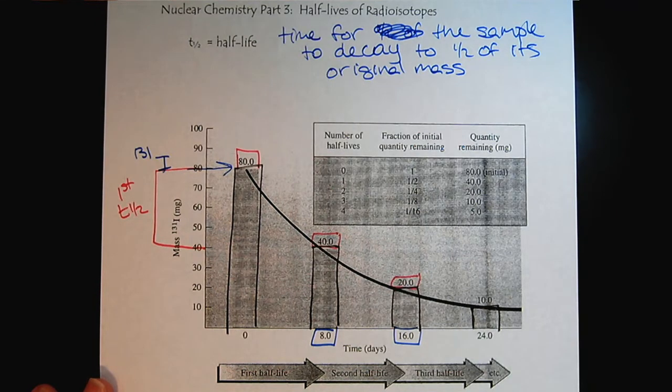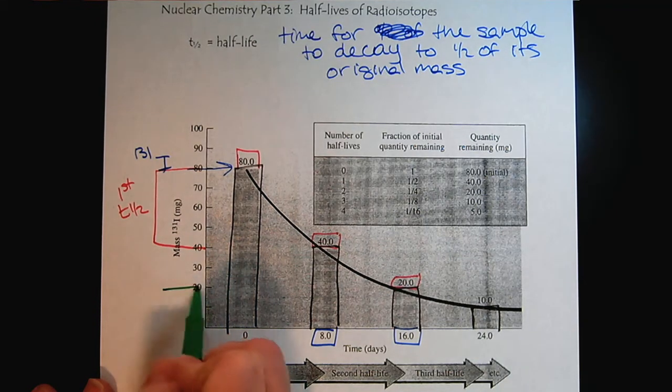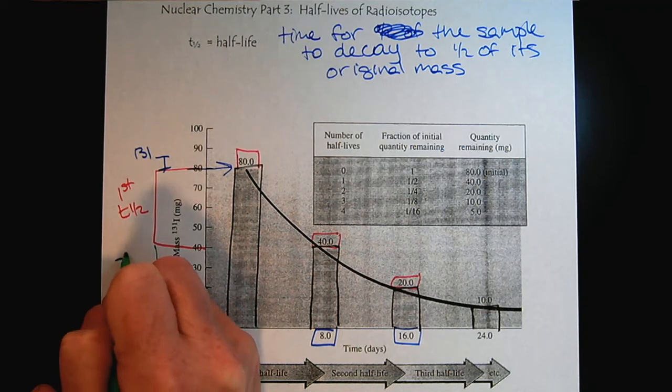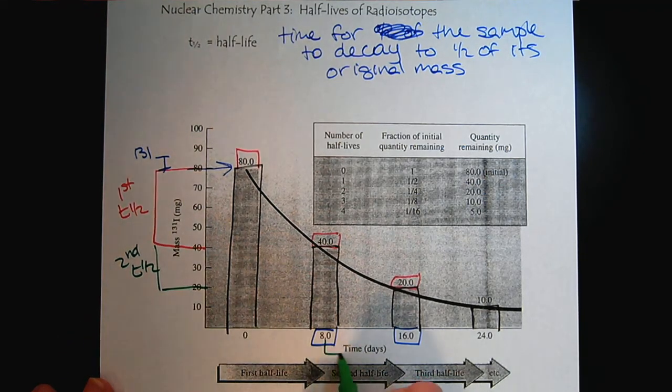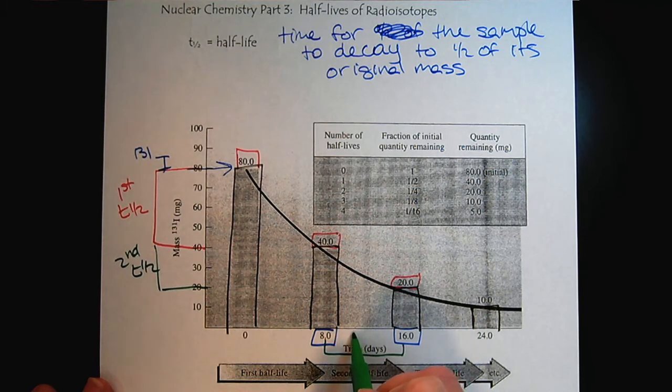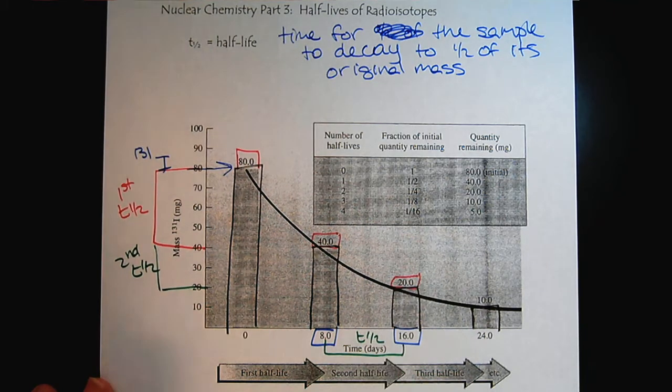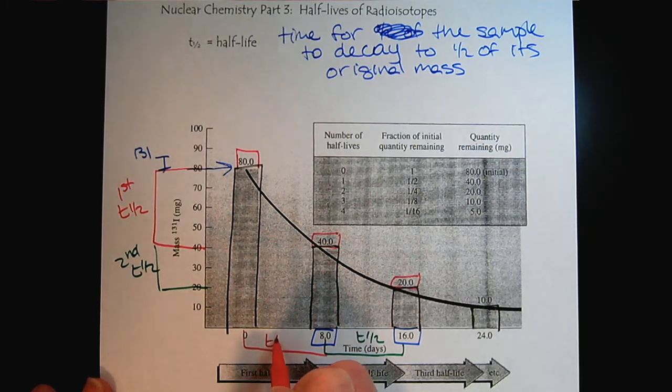So notice here, from here to here, this was the second half-life. So this was T one half, and then here was the first half-life.